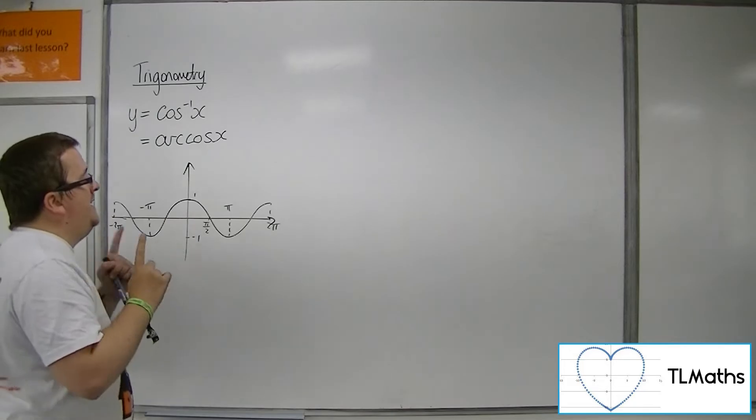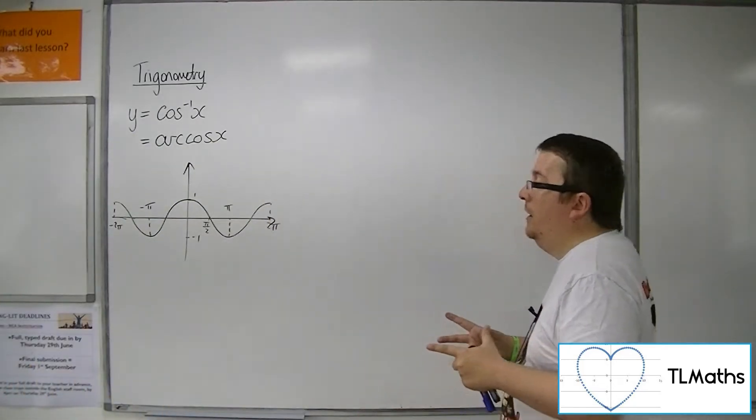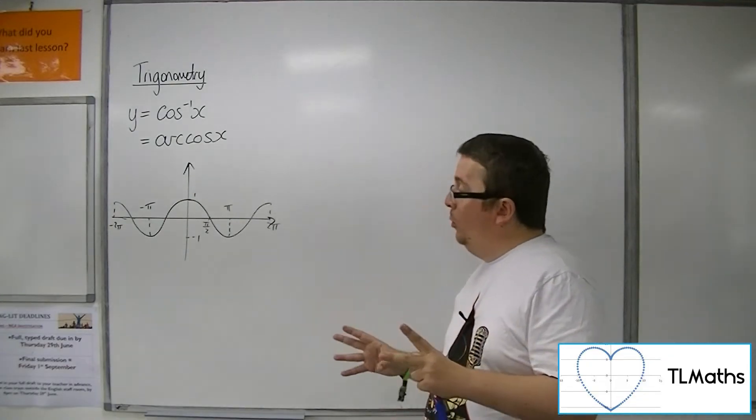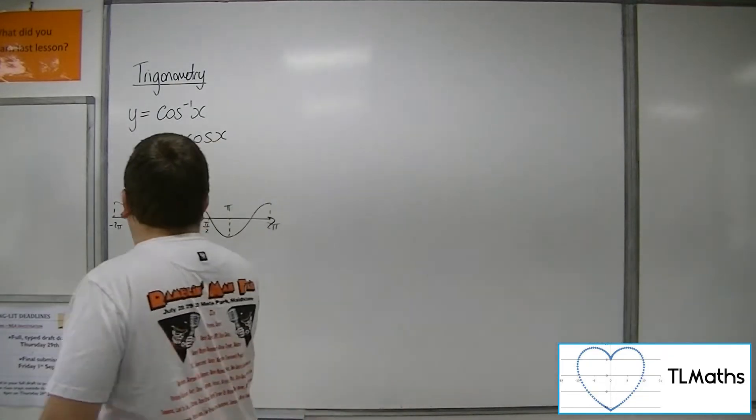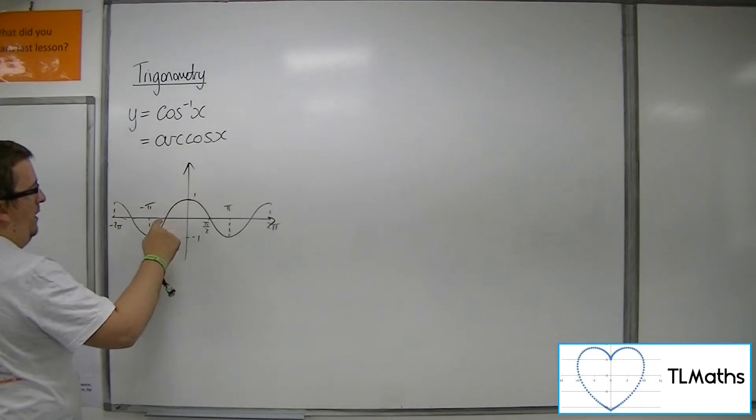OK, so what we can do then is, once again, we're trying to find a piece that is 1 to 1, OK, that covers all of the possible y values. So you could go from minus pi to 0, for example, because that goes from minus 1 up to 1, that's perfectly fine.